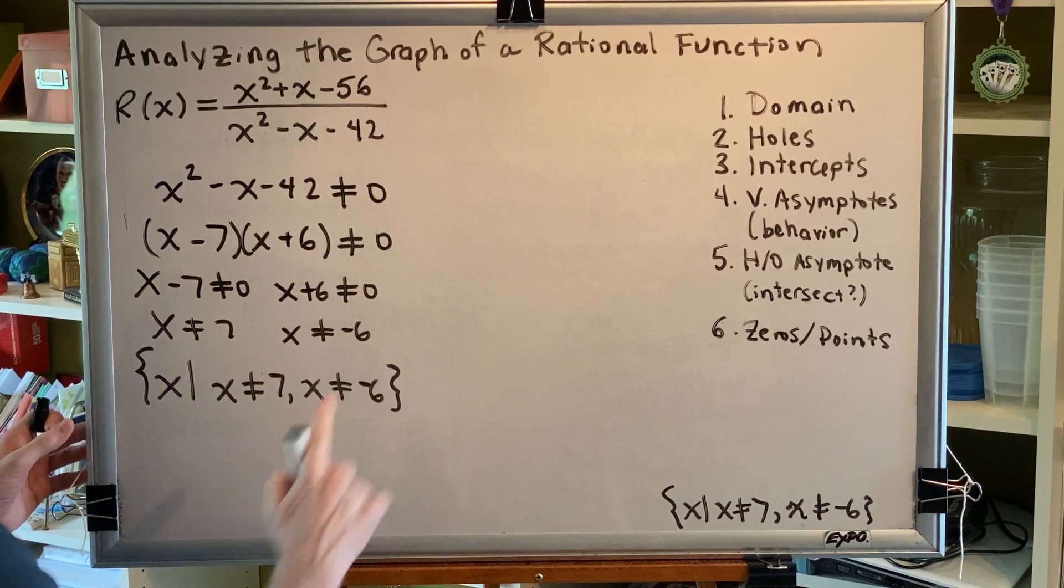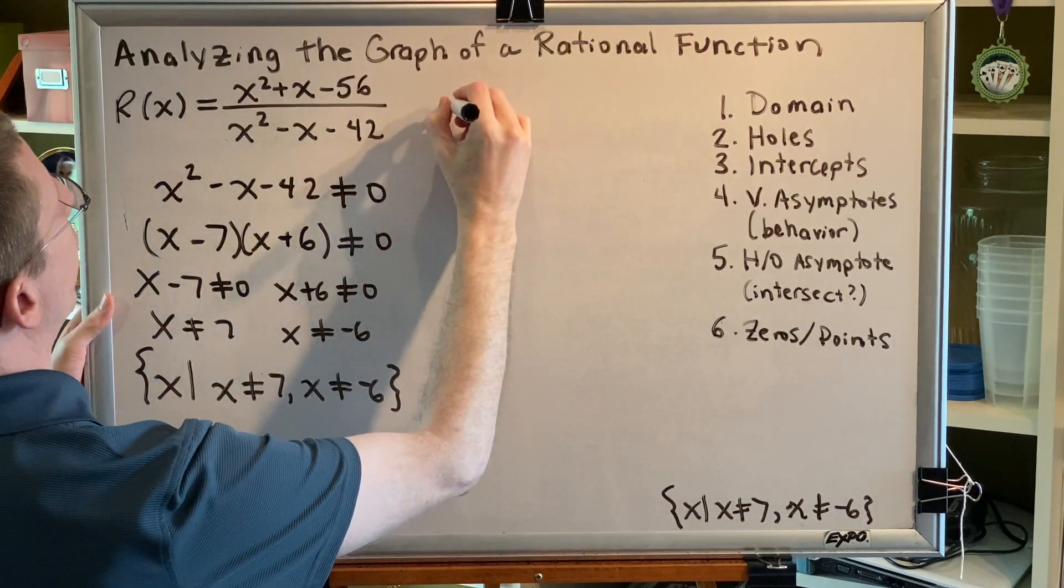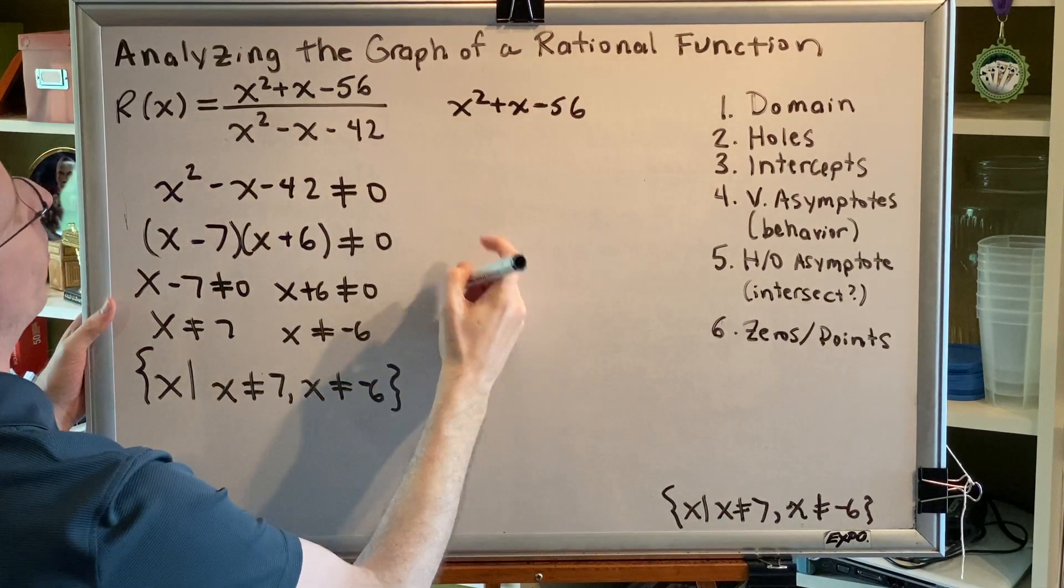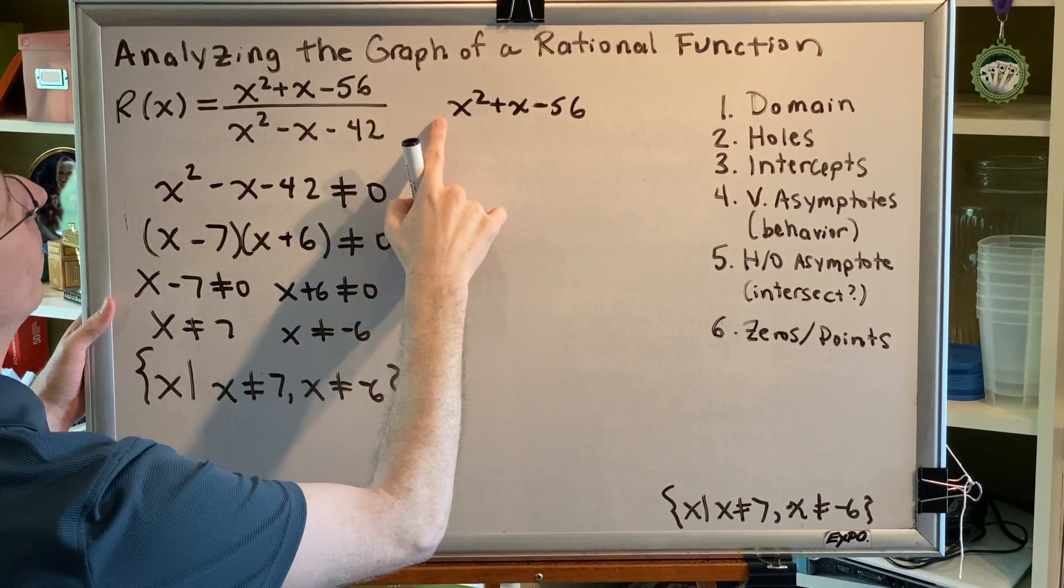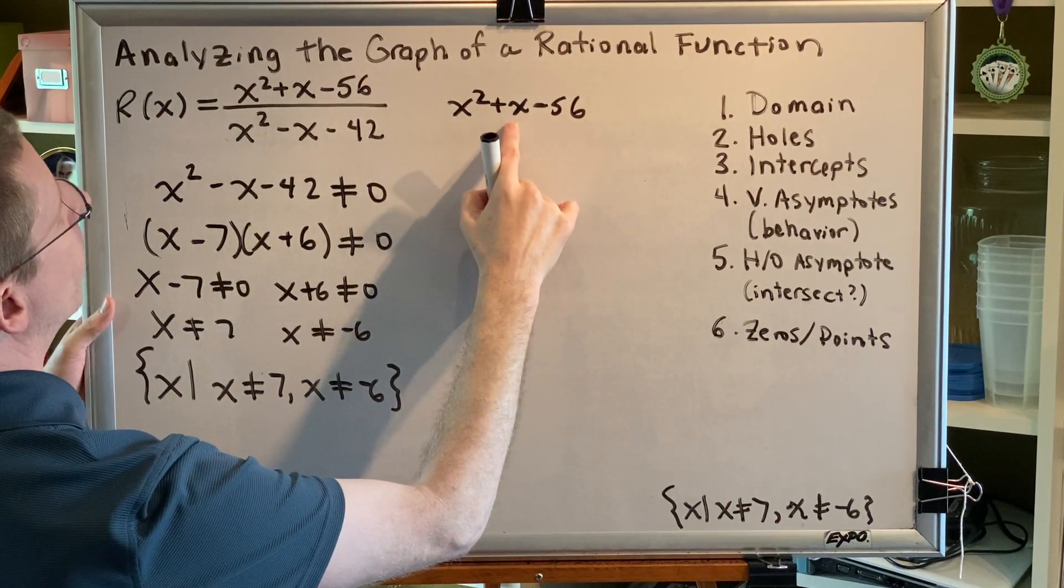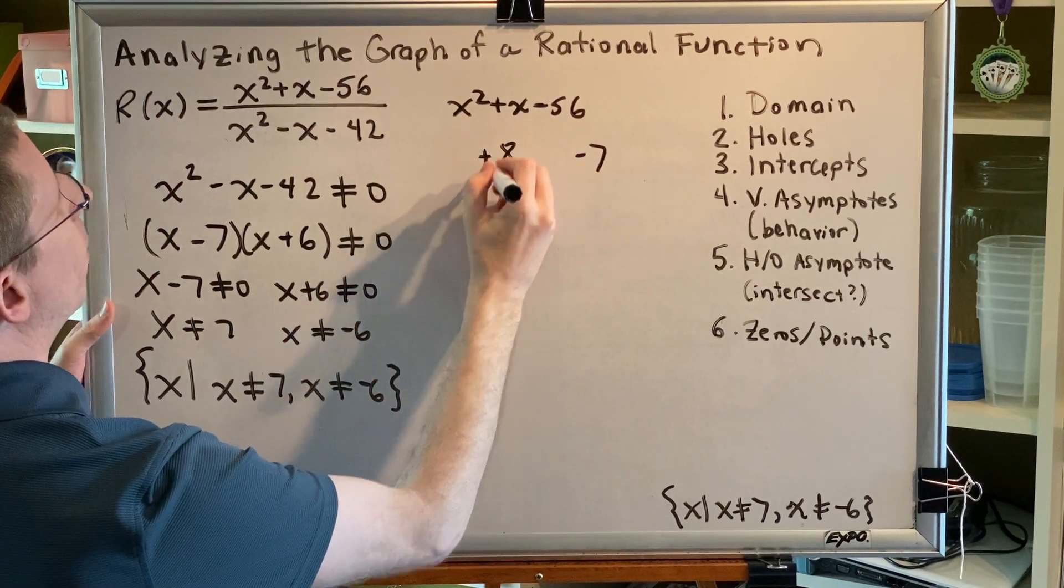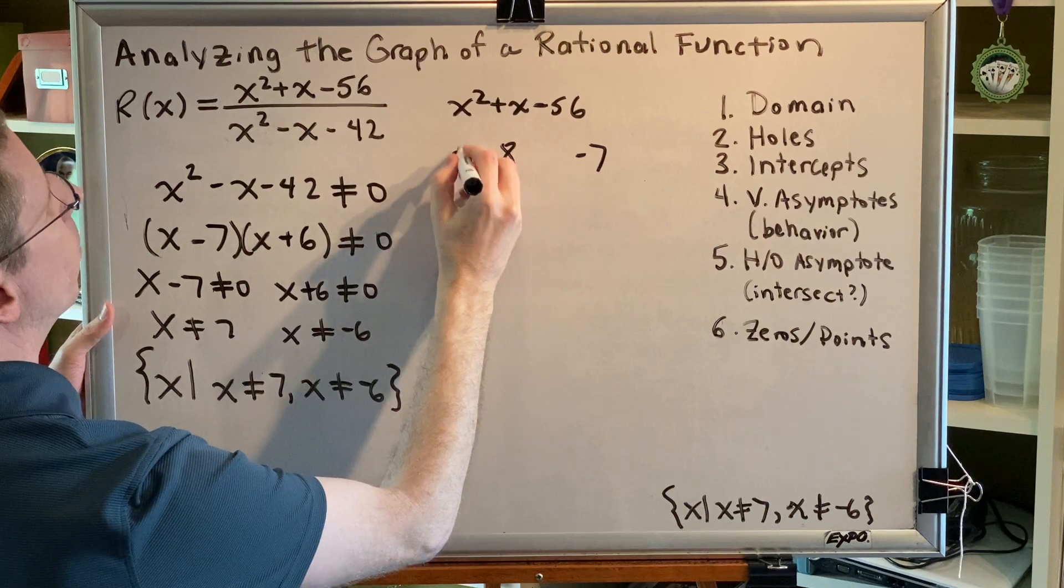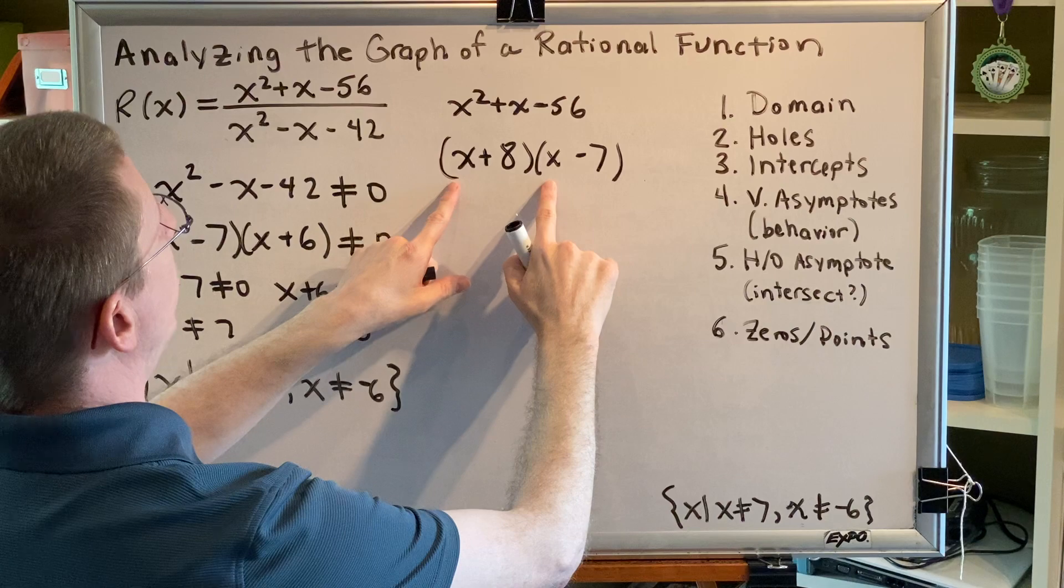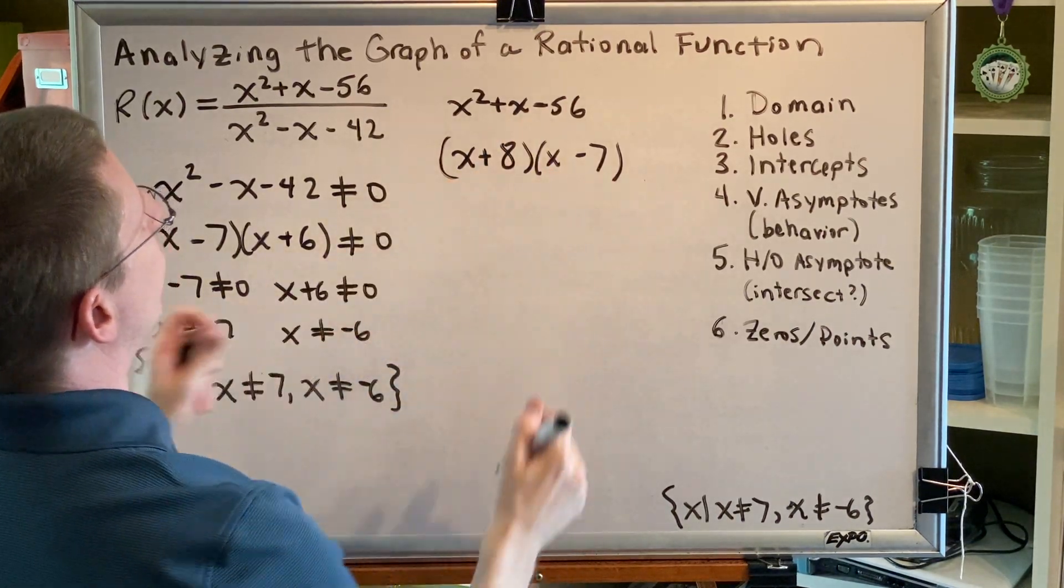So let's go through this process. We have already factored the denominator as part of step one, so now we just need to factor the numerator. x squared plus x minus 56 is a simple trinomial. The leading coefficient is 1. So we just need to come up with two numbers that multiply to make negative 56, but add to make positive 1. Those numbers are 8 and negative 7, positive 8 and negative 7. Putting an x in front of each one gives us our factors. We can check this with FOIL. x squared minus 7x plus 8x makes plus 1x minus 56.